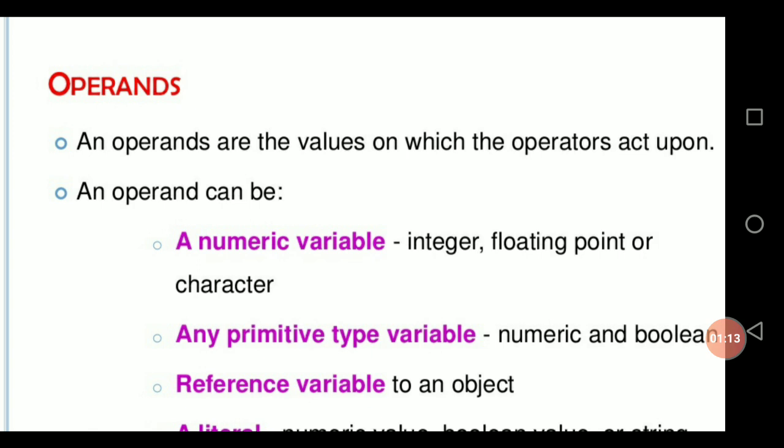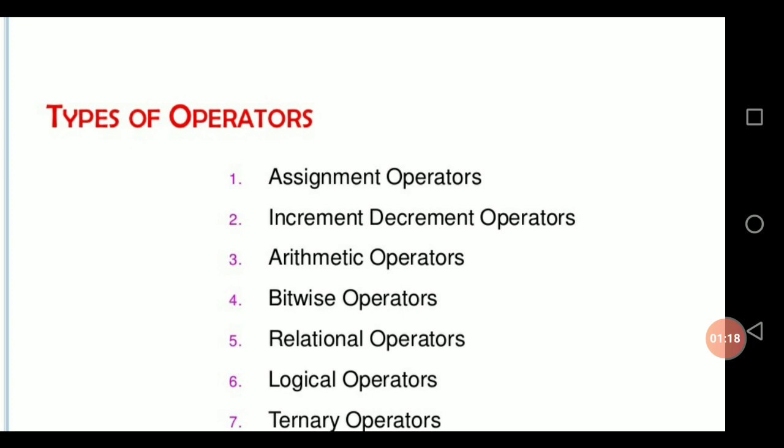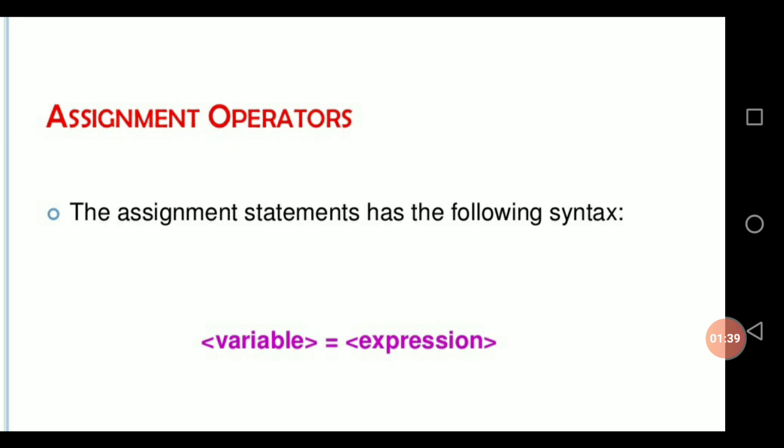Java supports different types of operators: assignment operator, increment-decrement operator, arithmetic operator, bitwise operator, relational operator, logical operator, and ternary operator. The first one is the assignment operator. The assignment operator is used to store a right-side value into the left-side variable.